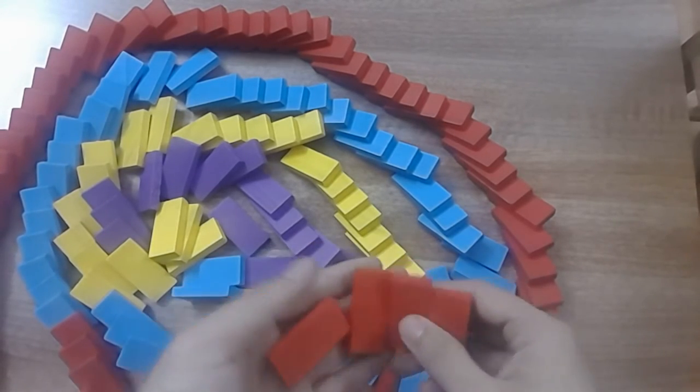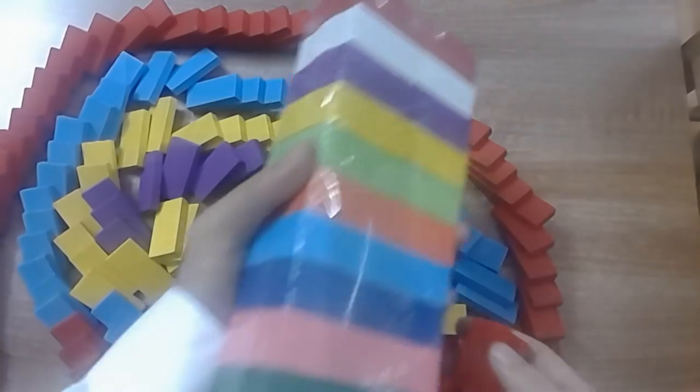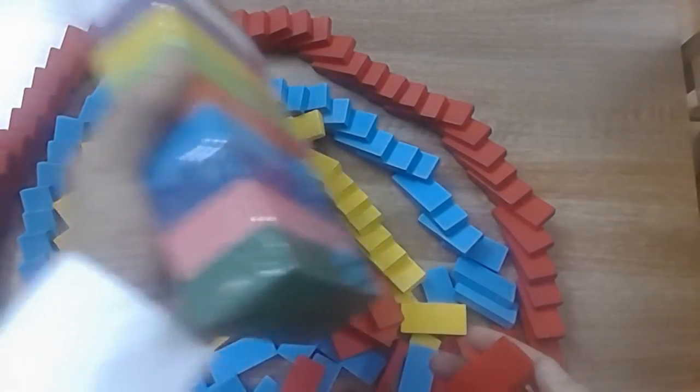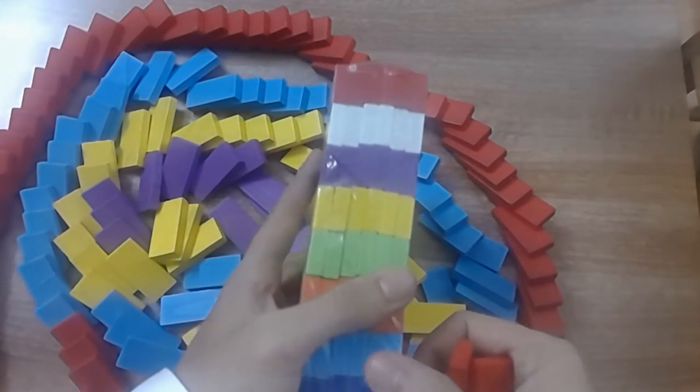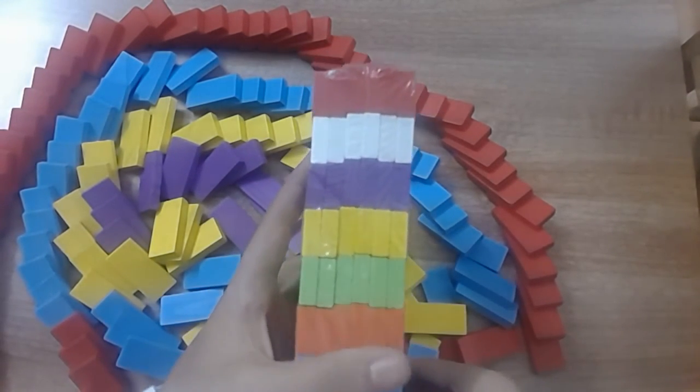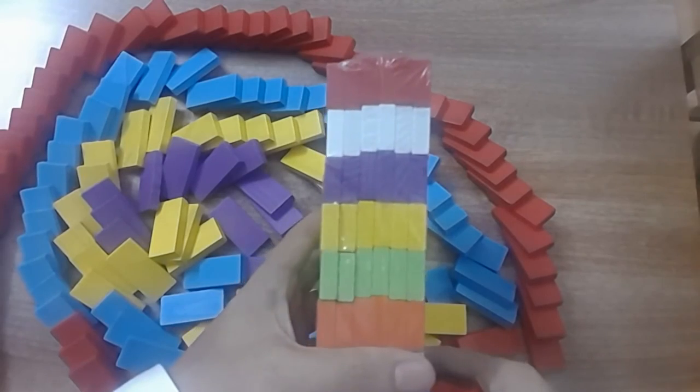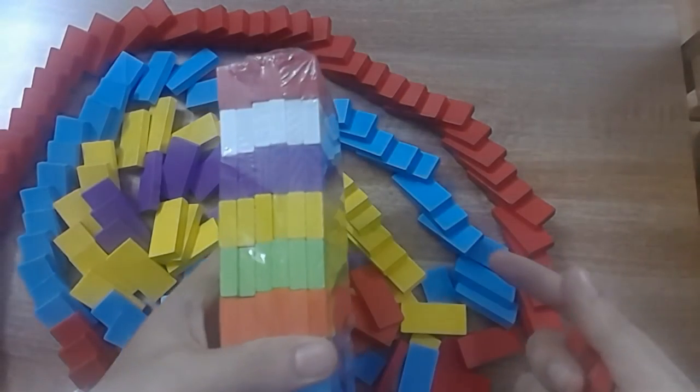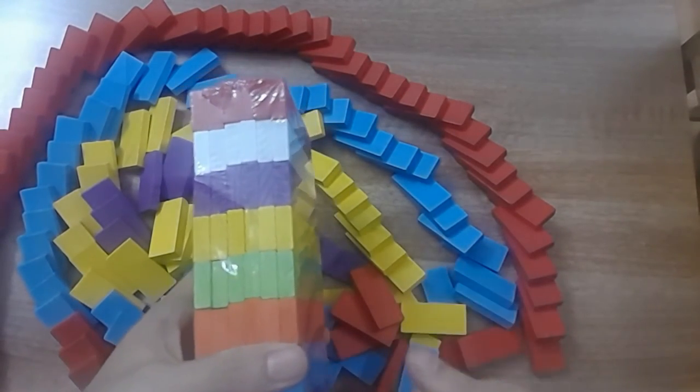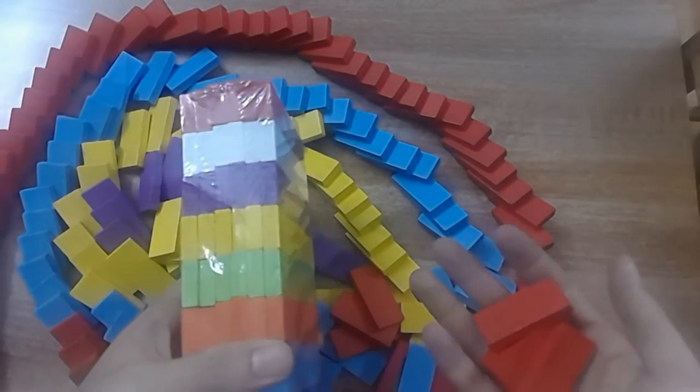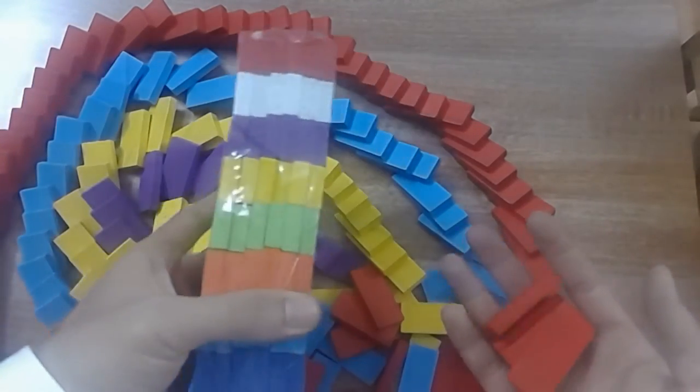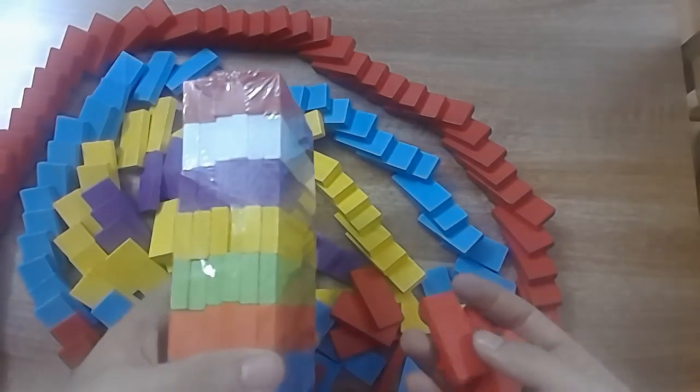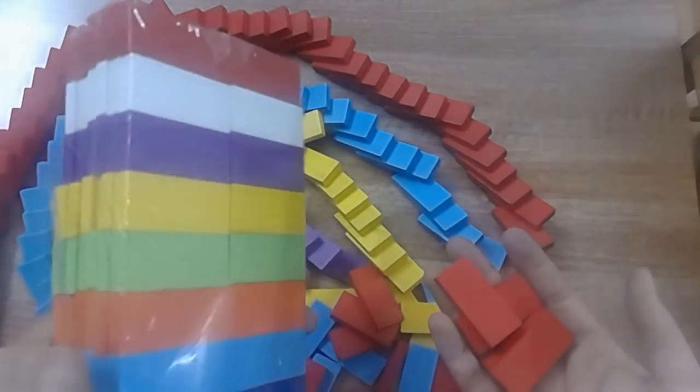Xin nhắc lại một lần nữa nhé. Một bộ domino như thế này sẽ có giá 120.000. Ba bộ thì tôi sẽ bán mỗi bộ có giá 100.000, nghĩa là giảm 20.000. Từ 3 đến 9 bộ thì có giá 100.000. Mua nhiều nữa, các bạn cứ liên hệ phía dưới nhé. 11 đến 19 bộ thì giá của nó là 90.000. Còn nhiều nữa, trên 20 bộ thì giá của nó chỉ có 80.000 thôi.